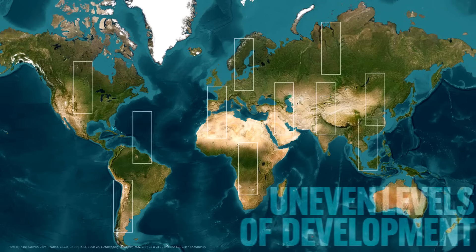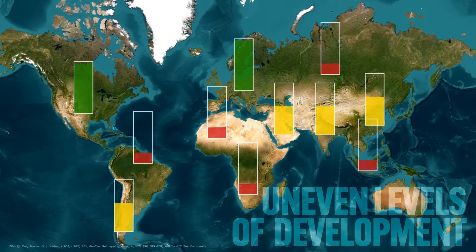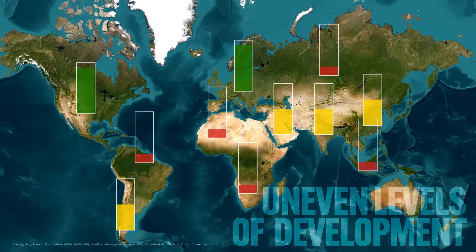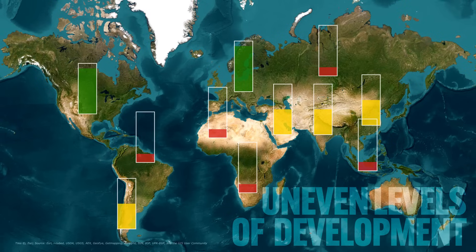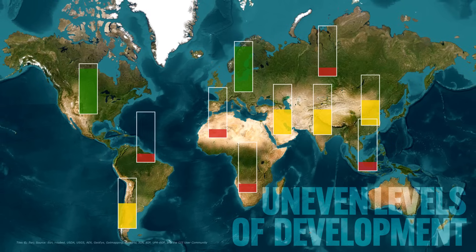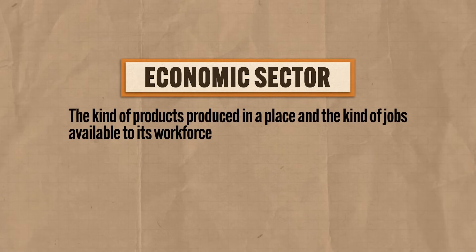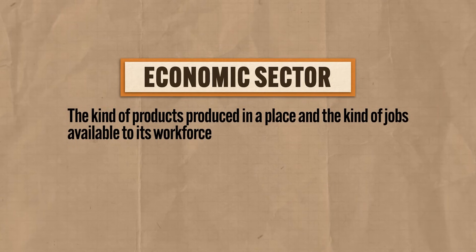As industrialization has progressed over the last few hundred years and as globalization has increasingly knit the world's economy into an interdependent whole, we can observe uneven patterns of spatial economic development across the world. This reality has created five different economic sectors. By definition, an economic sector refers to the kind of products produced in a place and the kind of jobs available to its workforce.